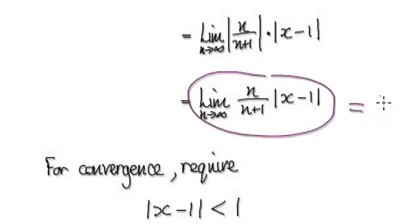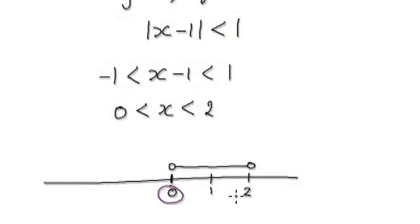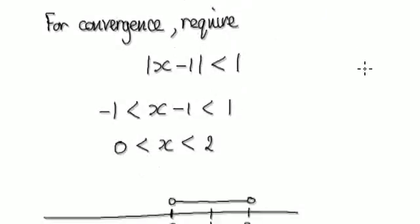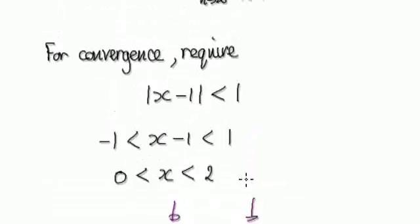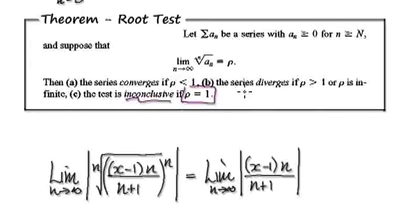Remember, if this value equals exactly one, the root test is inconclusive. If you put zero or two into the expression, the whole thing equals one. So we need to manually check what happens at exactly zero and exactly two. We'll do that in the next video.